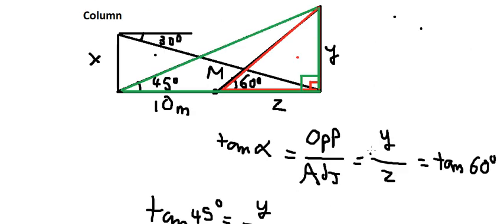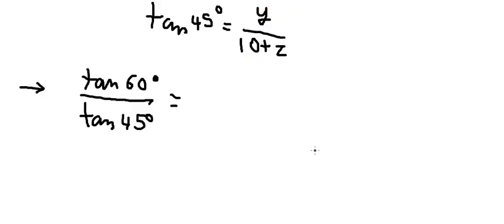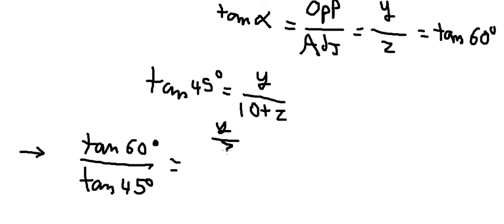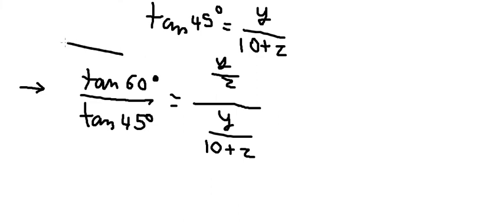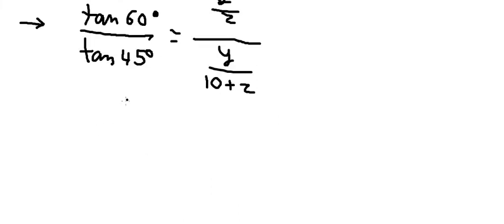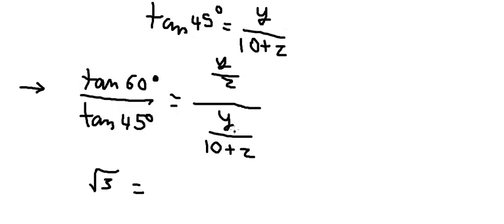So 60 degrees — that is this one. Now we simplify Y and Y here. We calculate this and get the square root of 3. So that should be 10 + Z over Z.